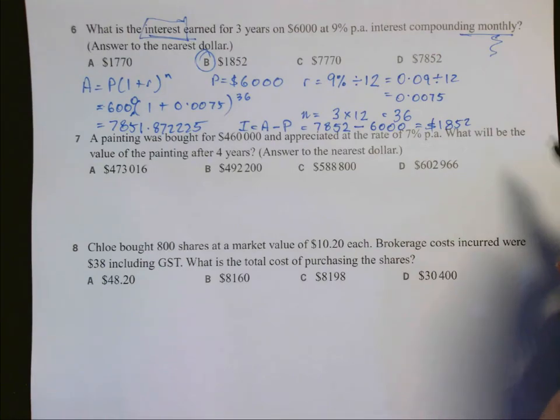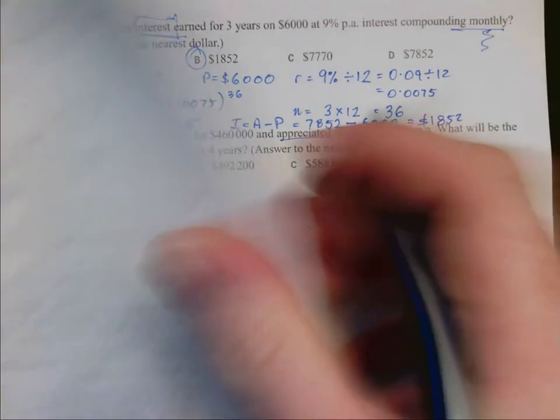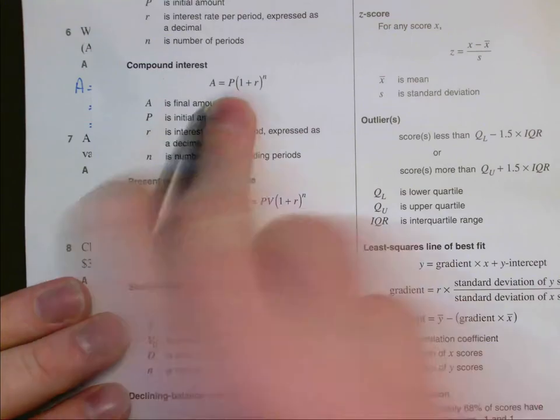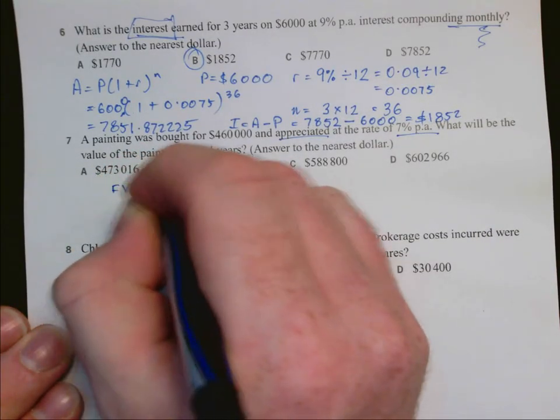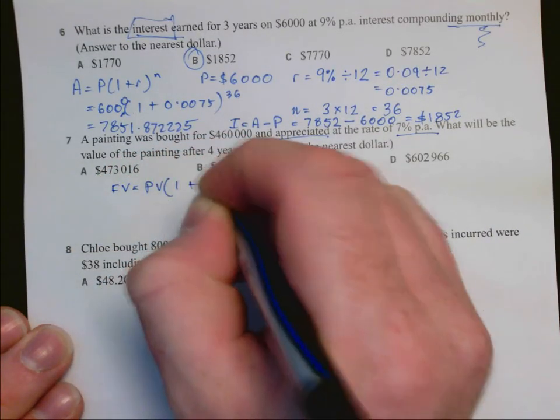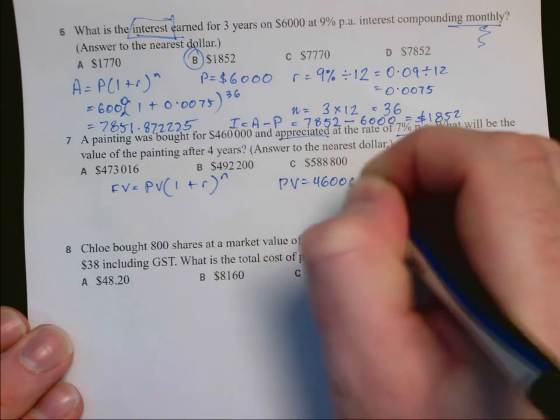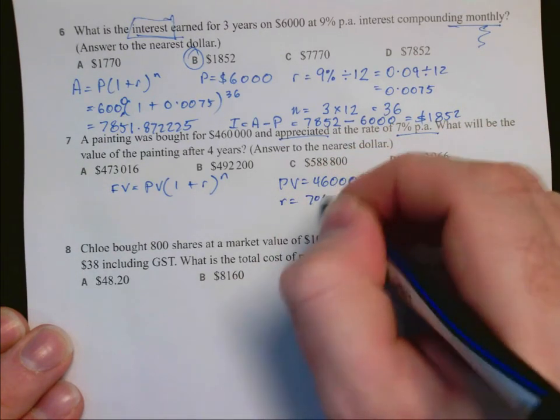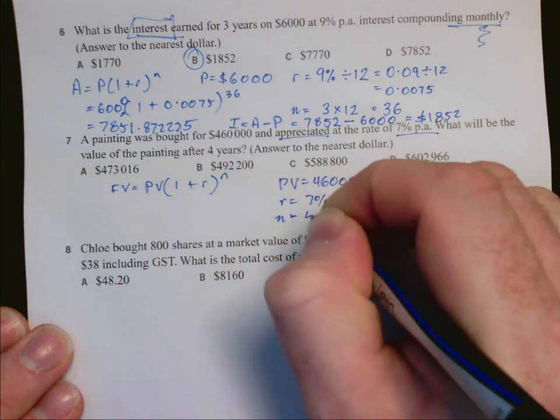In question 7, we are appreciating an amount by 7%. Either the compound interest formula or the future value formula can be used for appreciation. I'm going to use the future value formula. The future value equals the present value times 1 plus R to the power of N. The present value is $460,000, the rate is 7%, which equals 0.07, and the time period is four years.